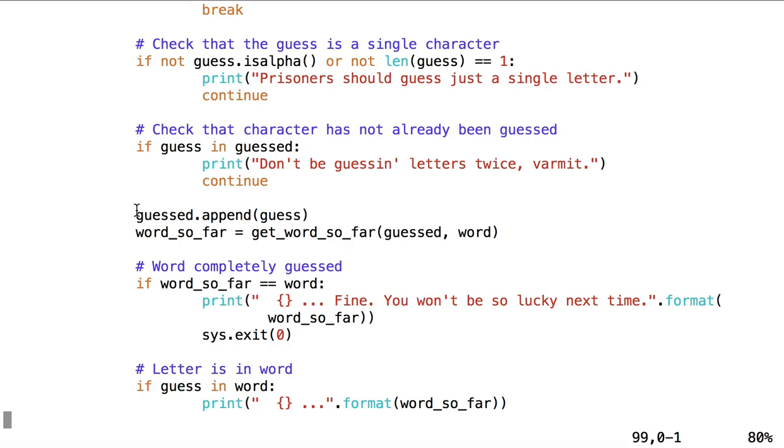If we do reach this point, that is if all these tests pass, then this is the next code that is run. We're going to append guess to the list called guessed, as we just talked about. And the next thing we're going to do is get a string called word so far from our other function in this code, get word so far, which takes as its parameters both the list guessed and the word, which is, once again, the target word. So we'll take a look at this method in the next video.